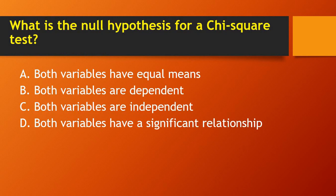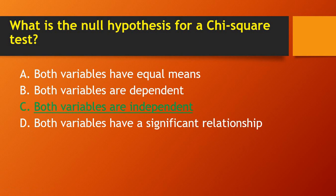Next question: what is the null hypothesis for a chi-square test — both variables have equal means, both variables are dependent, both variables are independent, or both variables have a significant relationship? The answer is: both variables are independent.